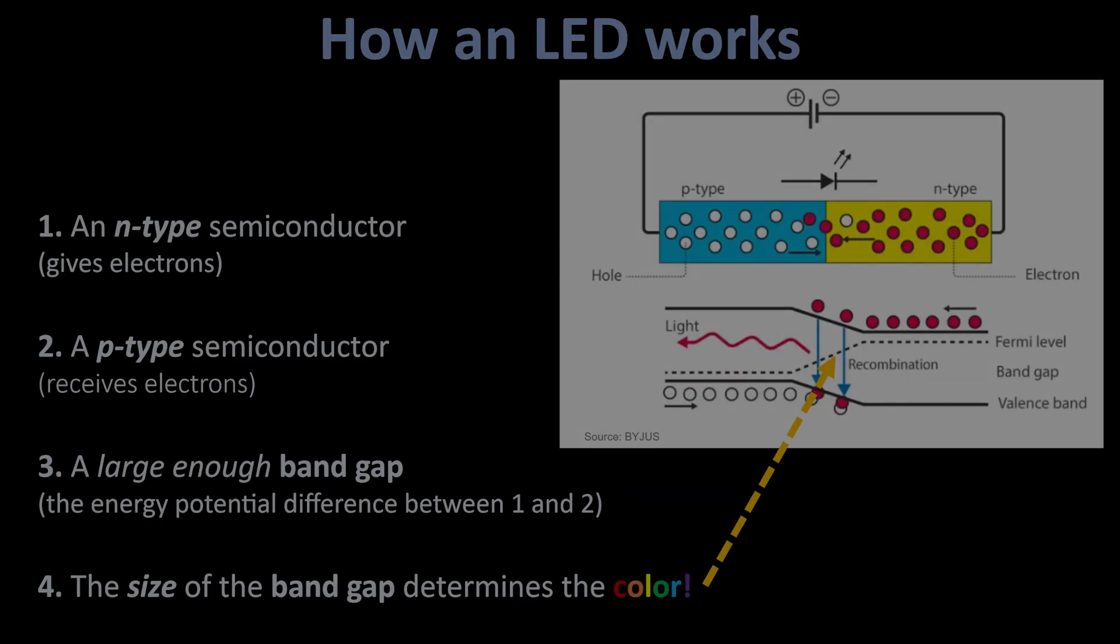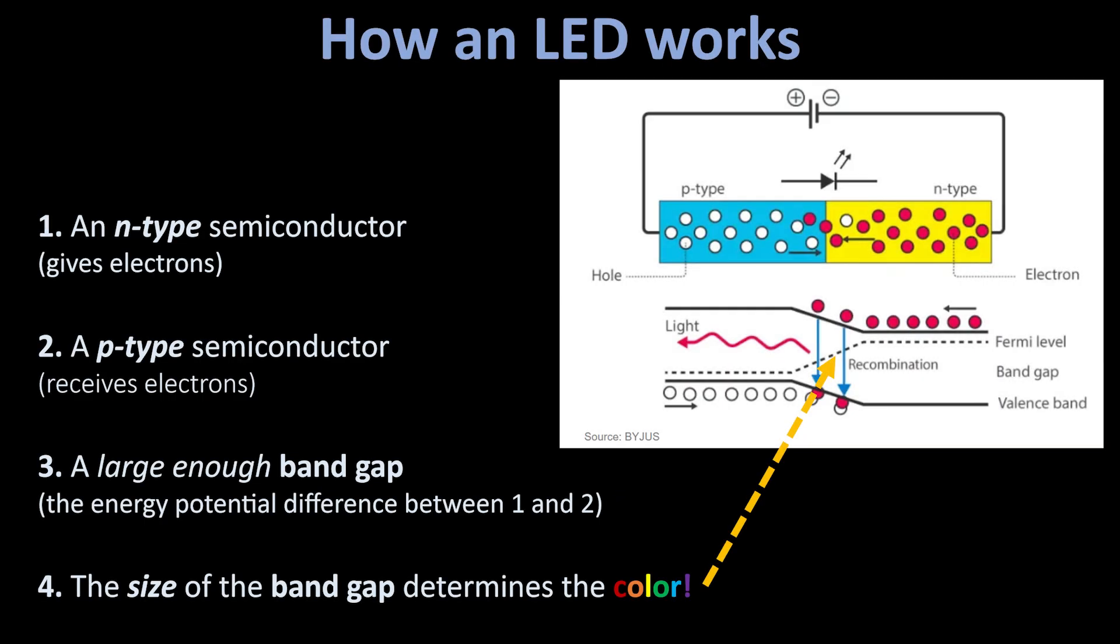Even cooler, the size of the energy gap determines the color of the light. So a small gap produces red, medium gap produces green, and a big gap produces blue. This will matter in a second.